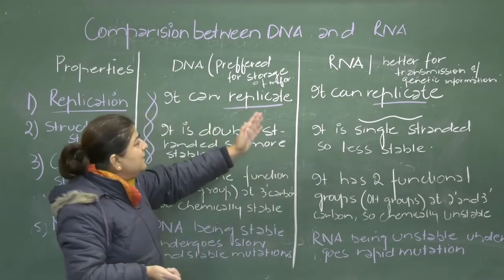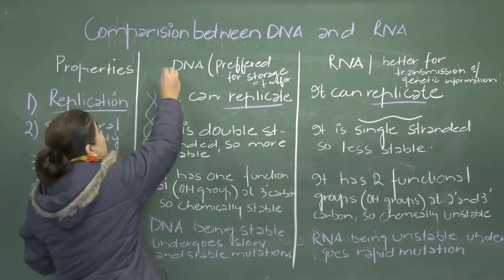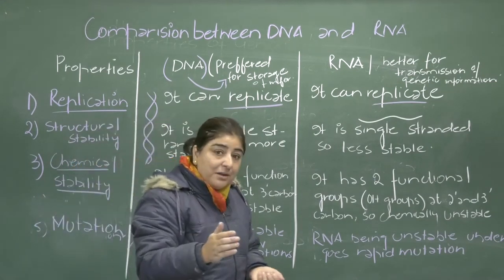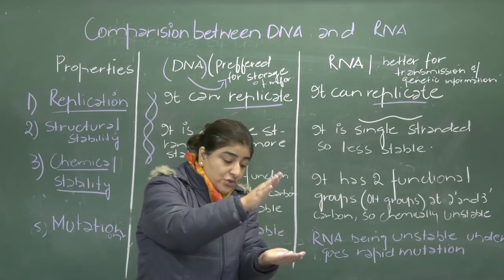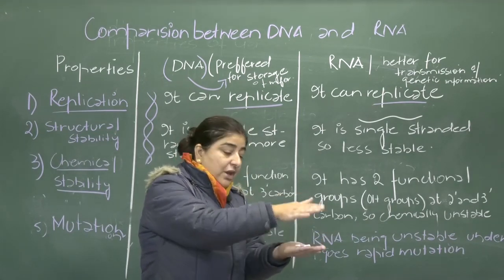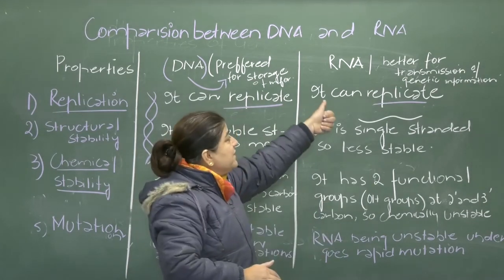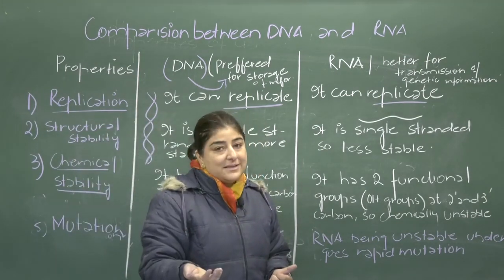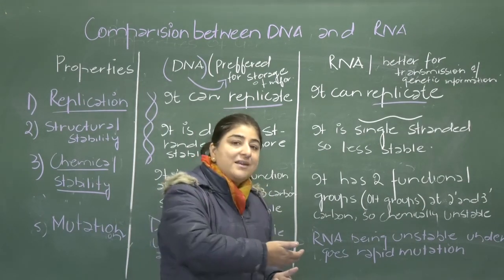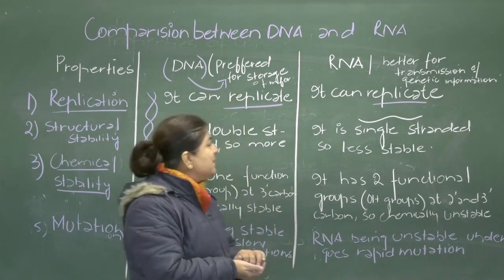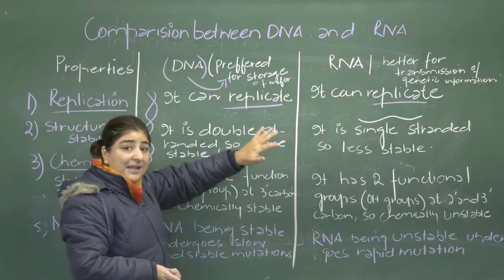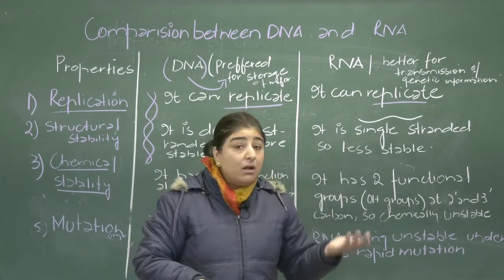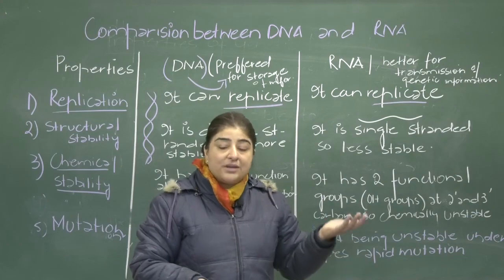In comparing the two, DNA is the preferred molecule for storage of information. DNA can protect information because one strand carries the information and the complementary strand provides protection. RNA is better for transmission of genetic information — it carries information from DNA for protein synthesis. Overall, DNA is preferred as a genetic material because it possesses all the properties that a stable genetic material should possess.